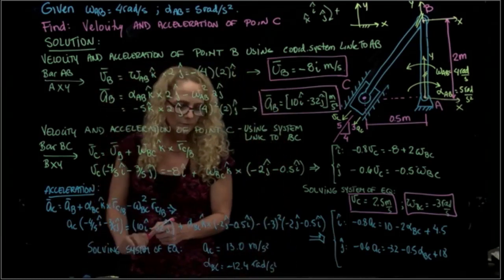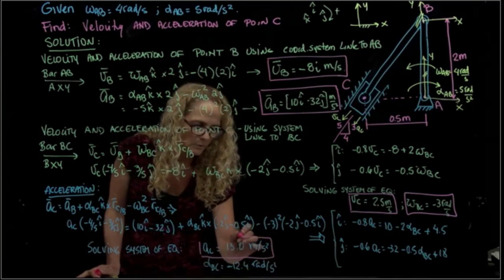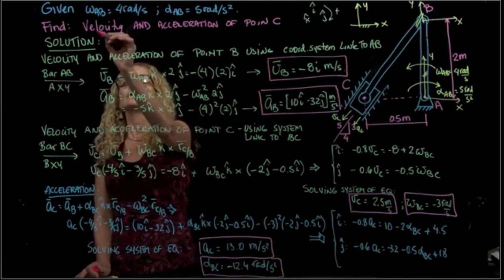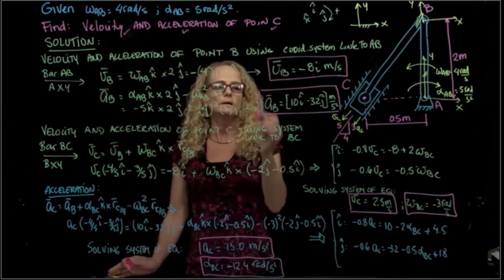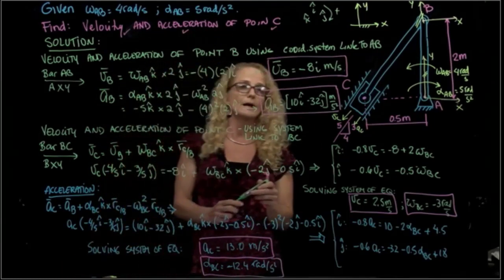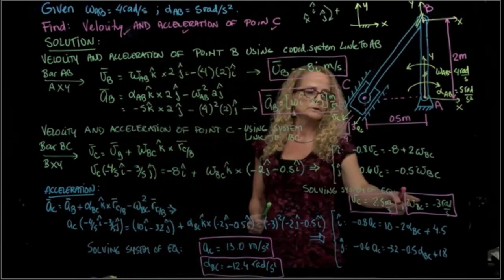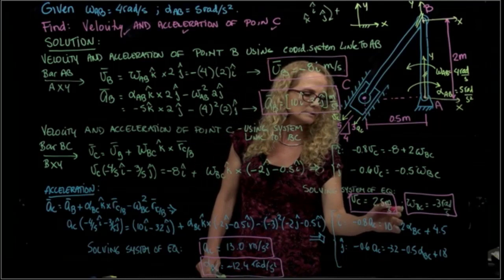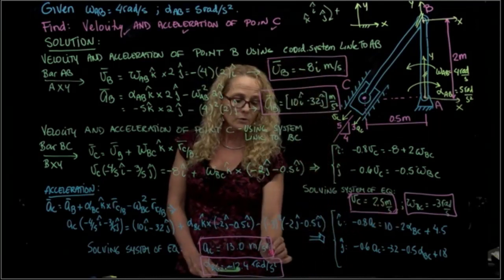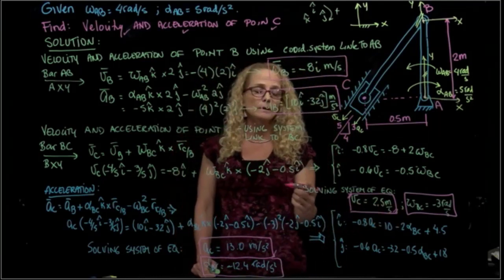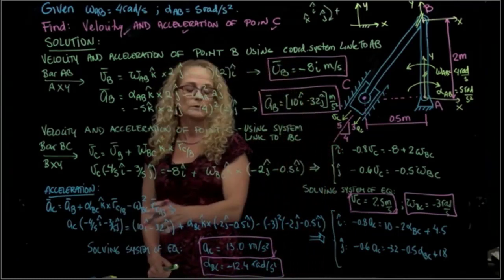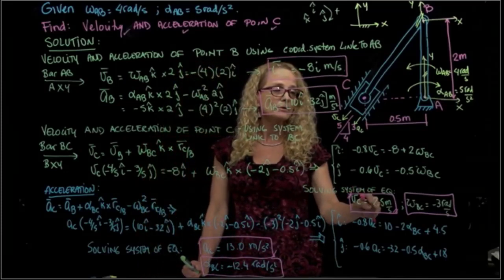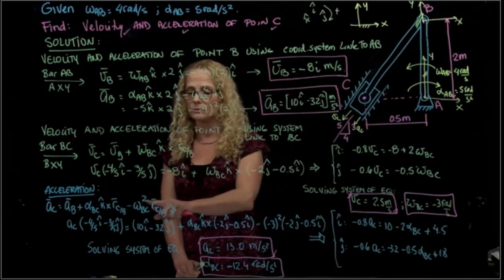So those are the values we were looking for. We were able to find the velocity and acceleration of point C. For that, we also had to find the angular velocity and angular acceleration of bar BC. The values asked for are the velocity of C and the acceleration of C. These are magnitudes only; the direction is known, and to get the vector components you multiply the magnitude times the direction unit vector.